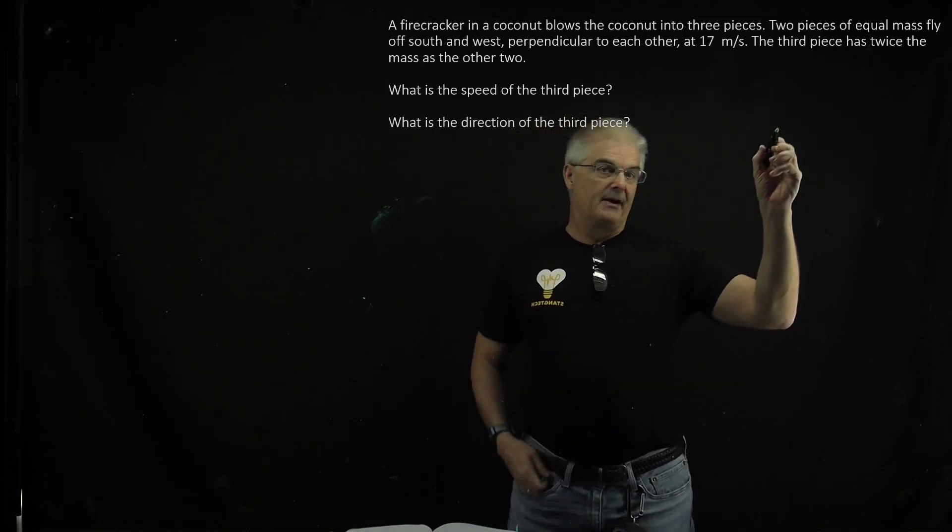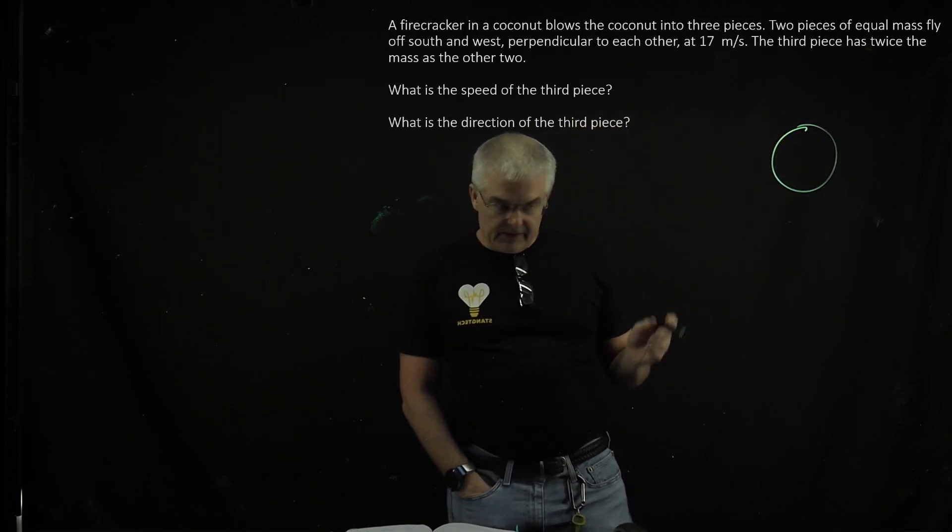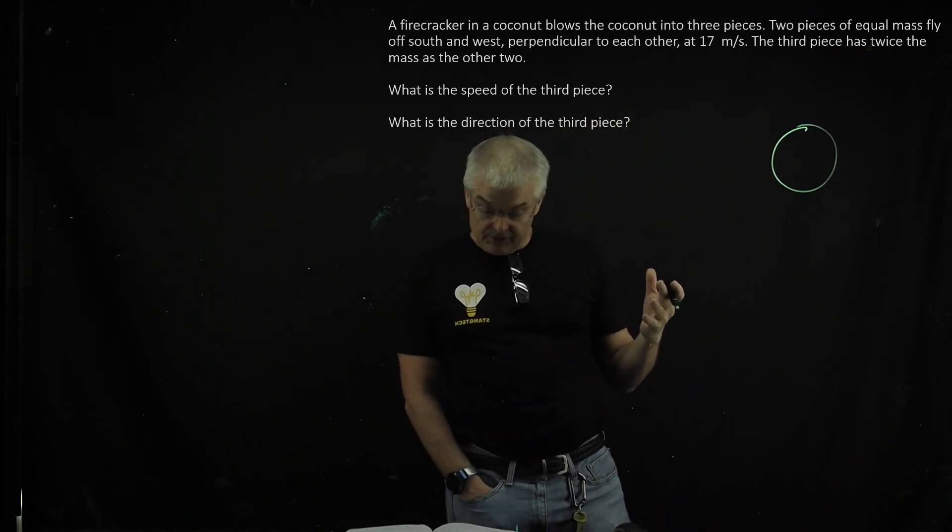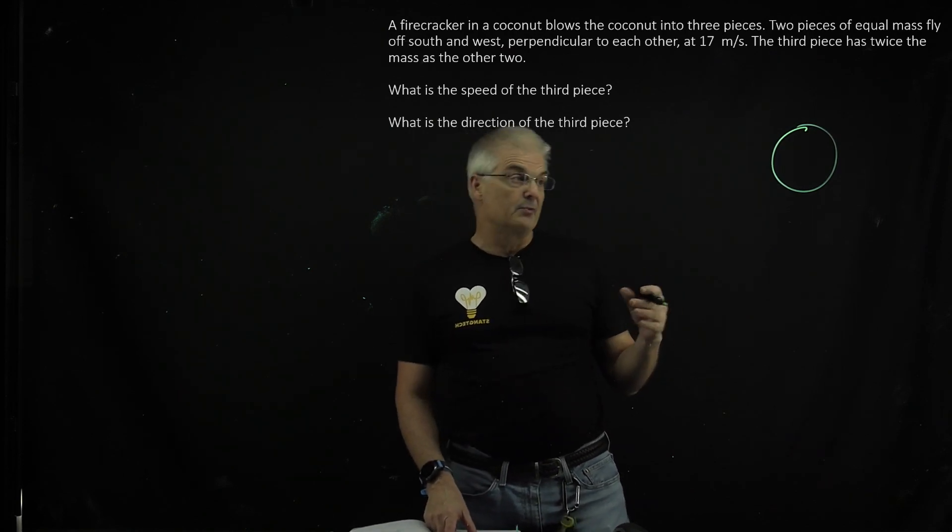Firecracker question. So we've got a firecracker. I'm going to draw it as a circle, but it turns out that when it explodes, it explodes into three parts, and what we want to do is figure out some numbers. What's the speed of the third piece? What's the direction of the third piece?